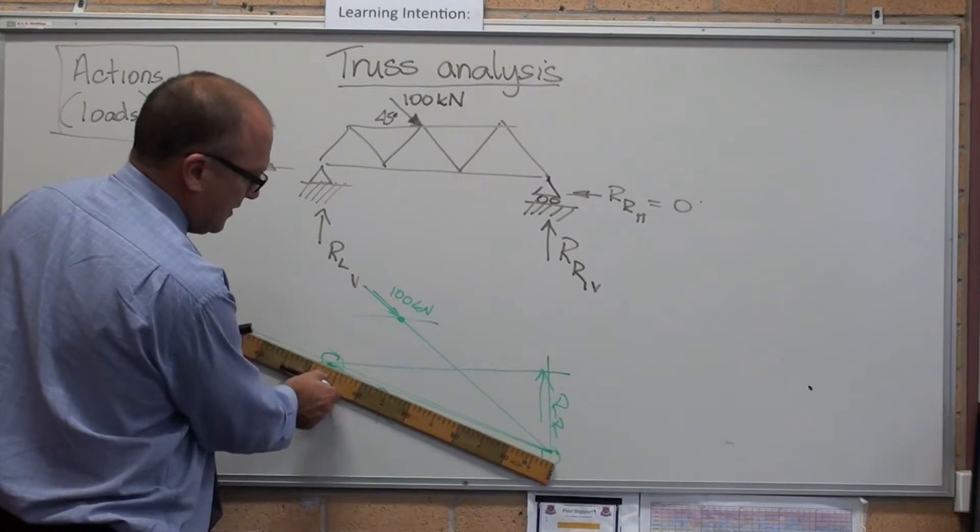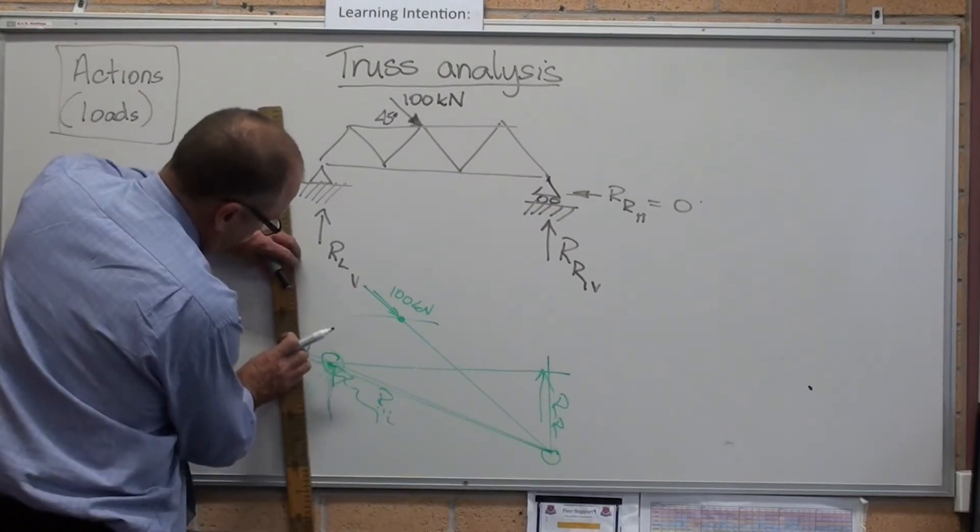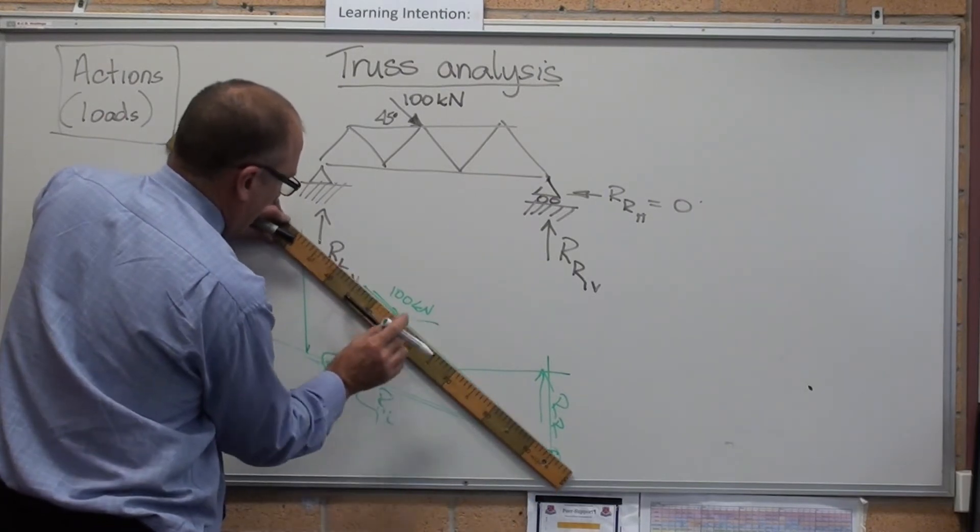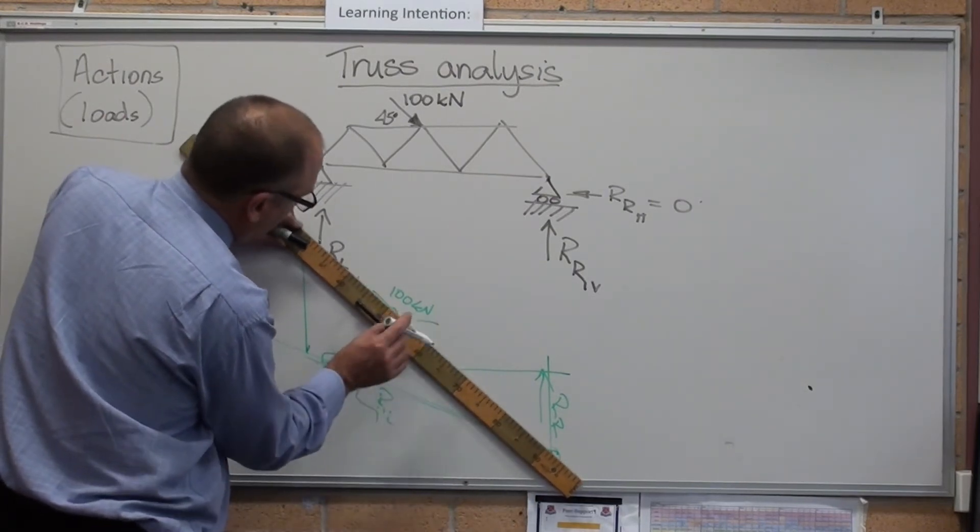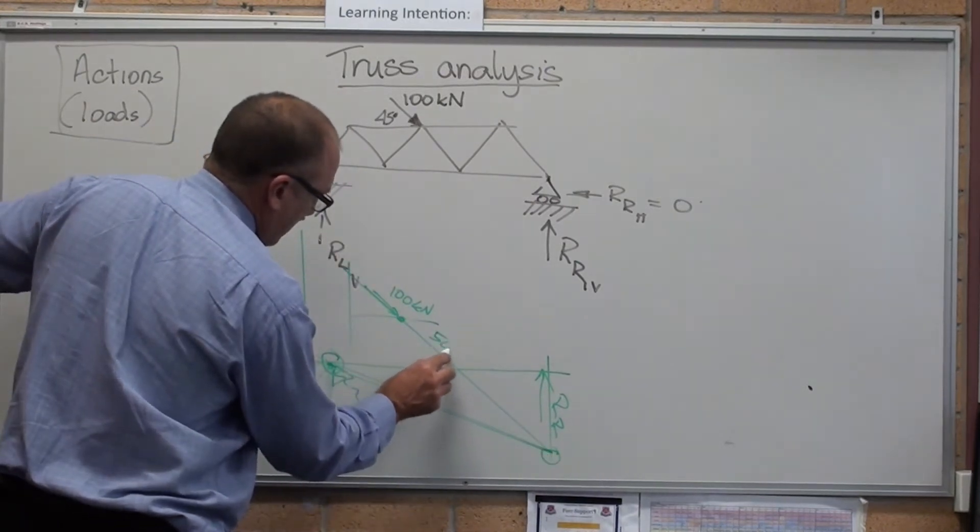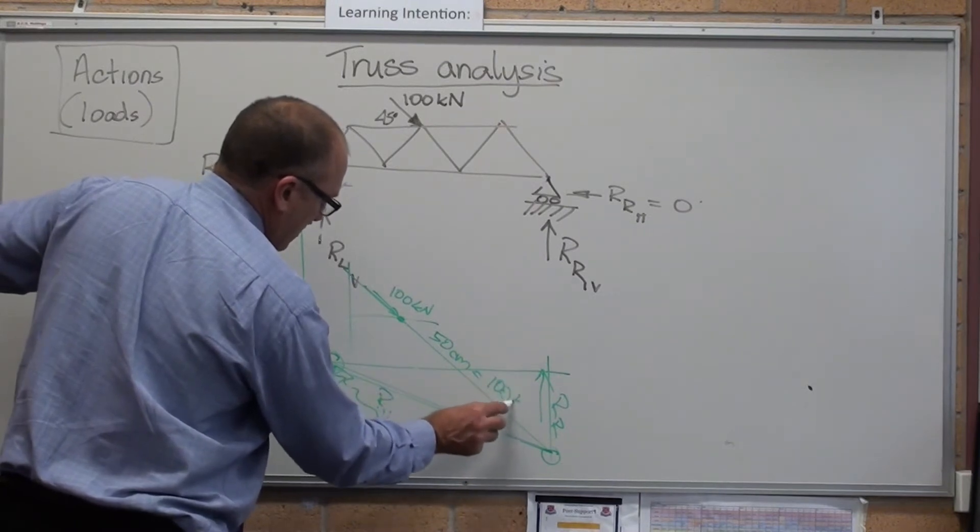Now I'm going to pretend I've drawn this out to scale. There is 50. I don't know why I picked that one as 50. I'll pick this one as 50. There. That's 50 centimeters equals 100 kilonewtons.